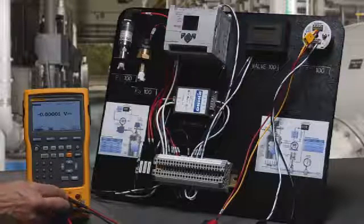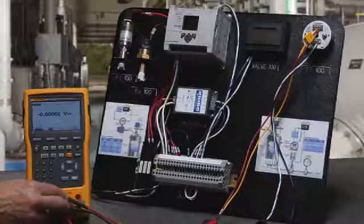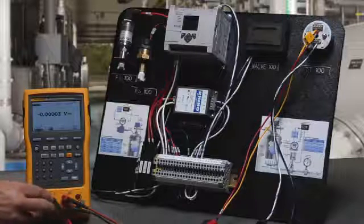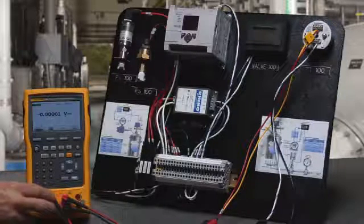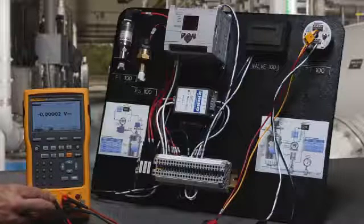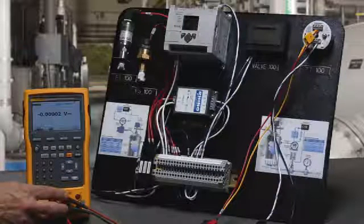We're going to power the transmitter and measure the milliamp signal measured back on the milliamp input jacks of the calibrator, and we're going to simulate an RTD input into the transmitter while simultaneously measuring the milliamp output signal.